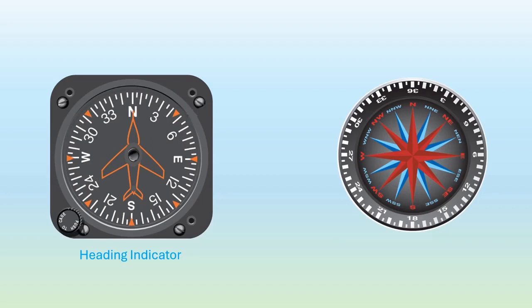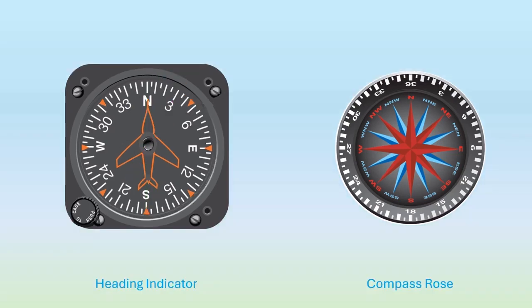The heading indicator's compass card resembles a compass rose. The dial is marked with numbers at intervals of 3, denoting angles from magnetic north in 30-degree increments, measured clockwise. The final zeros in degrees are omitted. For instance, the number 3 represents a 30-degree angle from magnetic north. The letters N, E, S, and W represent the four cardinal directions. Each long line on the scale stands for 10 degrees, and the short lines are 5 degrees.